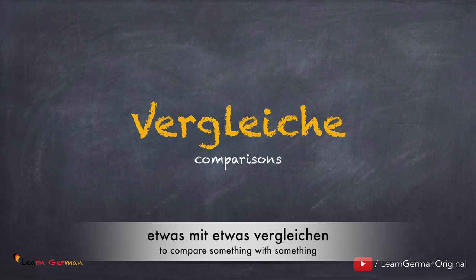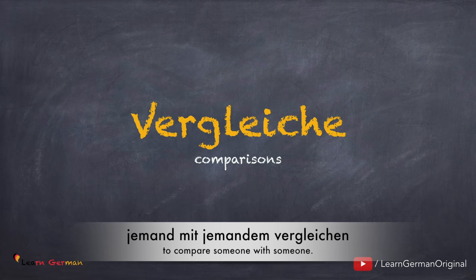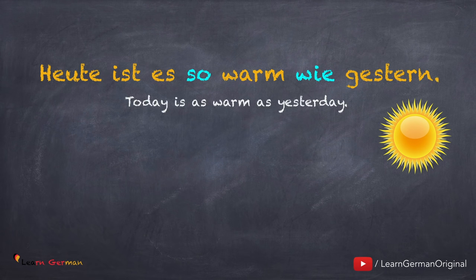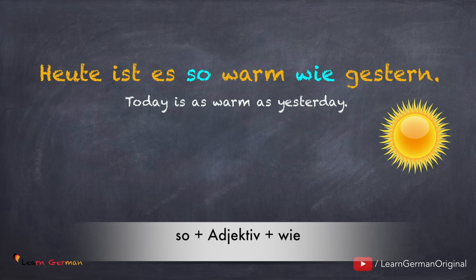Man kann Sachen vergleichen oder Personen vergleichen. Hier sind ein paar Beispiele von der Positivform oder die Grundform von dem Adjektiv. Heute ist es so warm wie gestern. Here we are comparing today's temperature with yesterday's temperature. And since both of them are the same, we'll be using the positive form of the adjective together with so and wie.